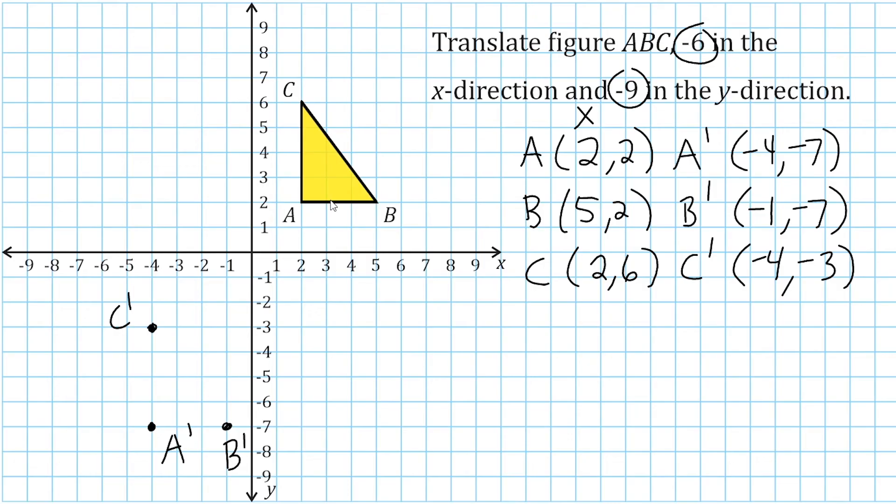So we're going to slide this triangle the distance of one to the left, two to the left, three, four, five, six. So we just moved that negative 6 in the x direction. Now we have to move it negative 9 in the y direction. So we go downwards: one, two, three, four, five, six, seven, eight, and of course, nine.